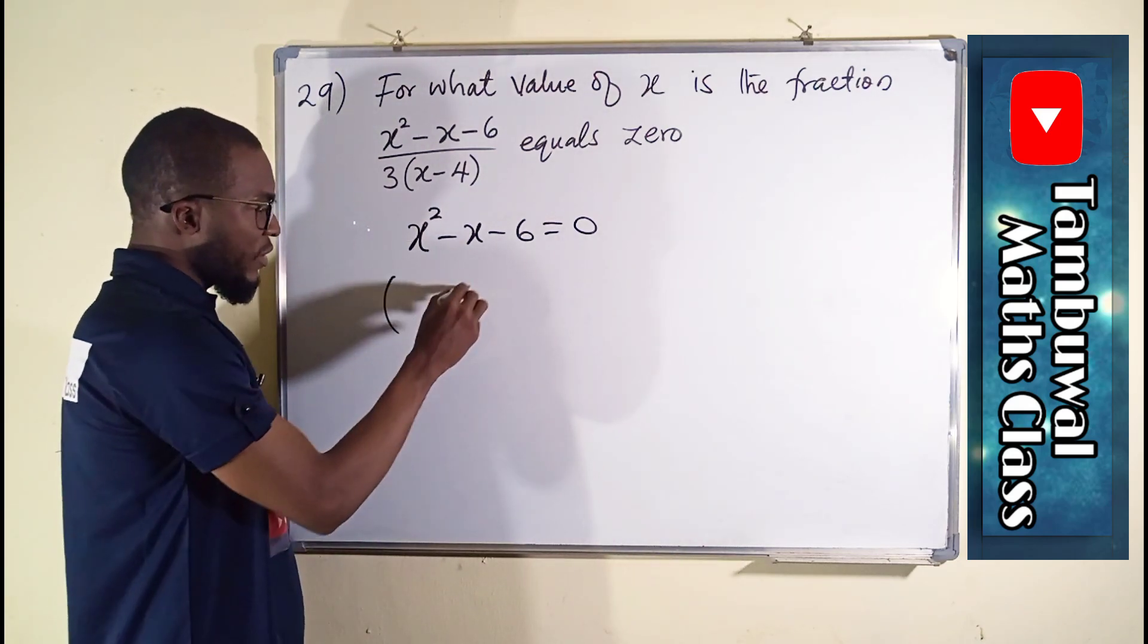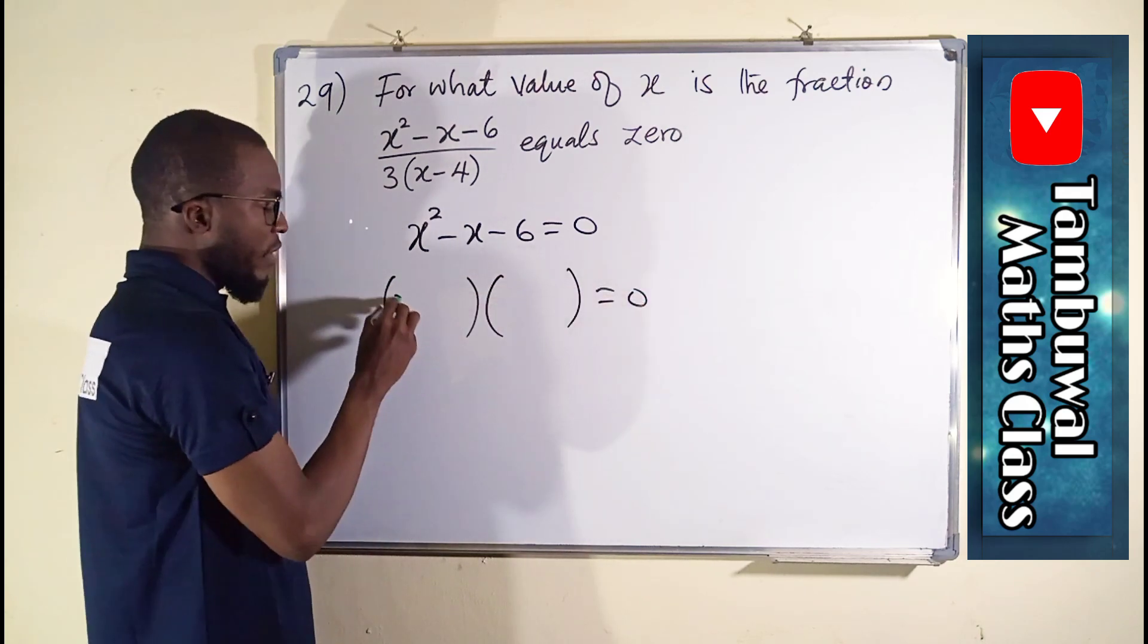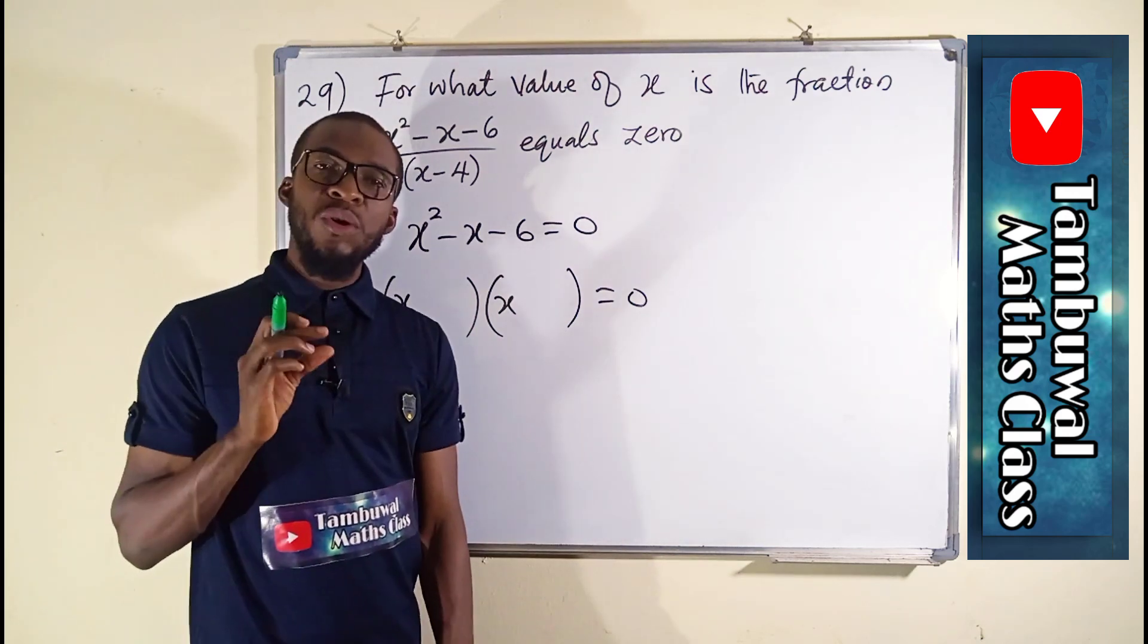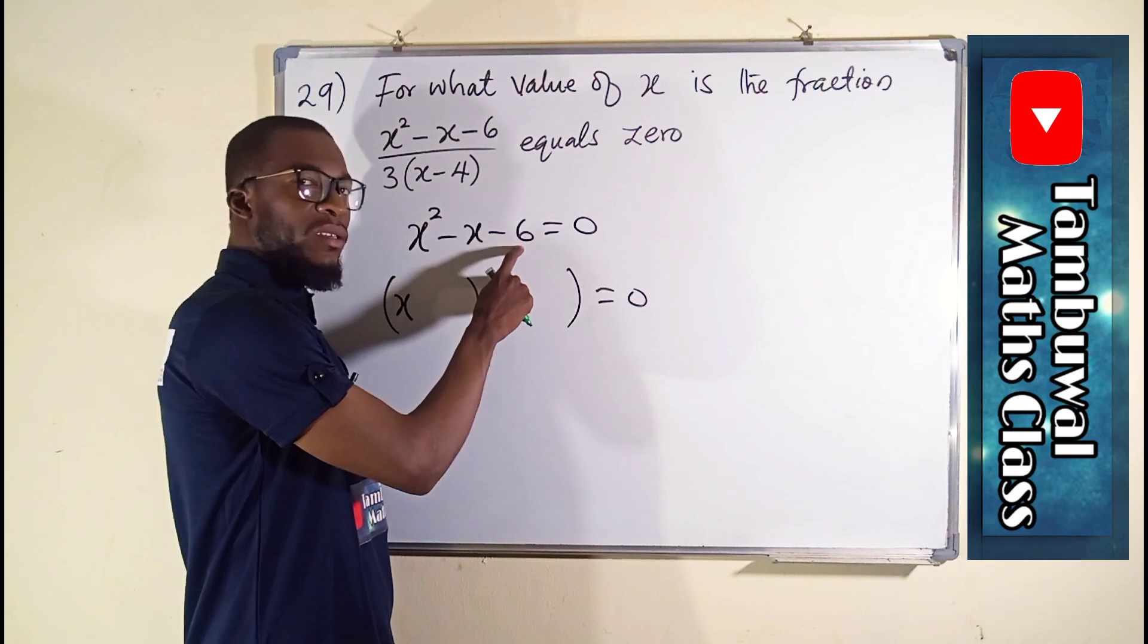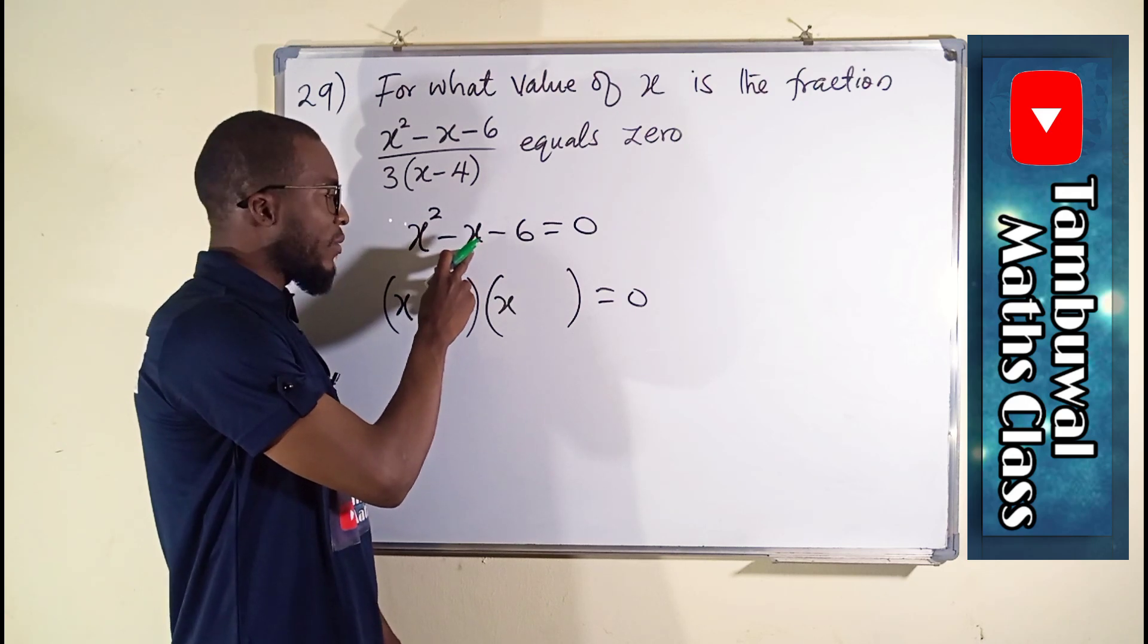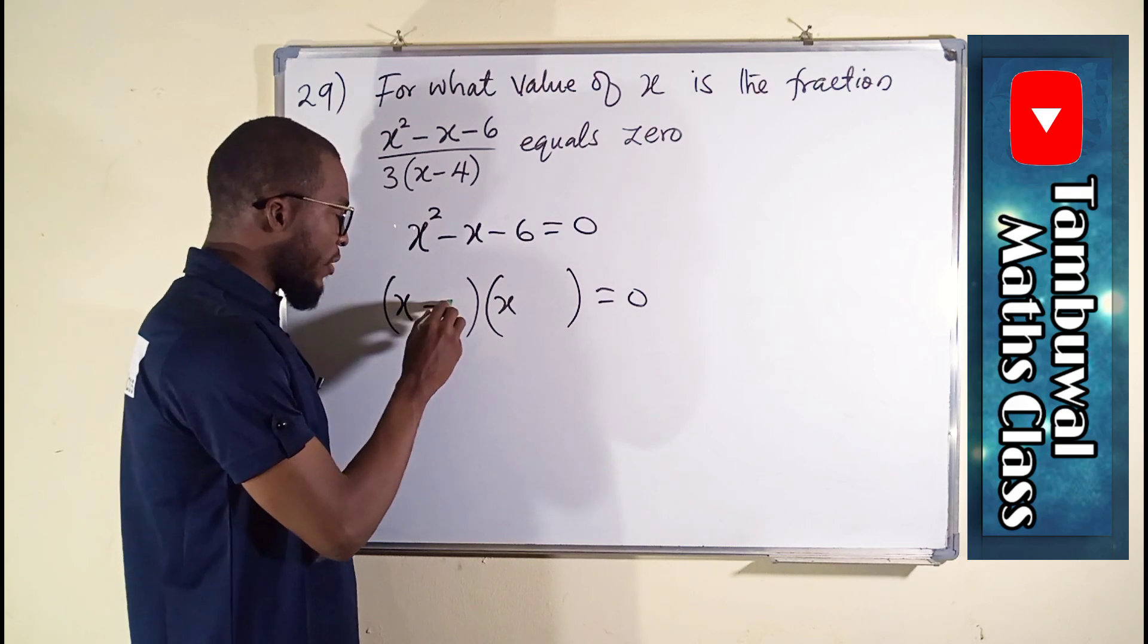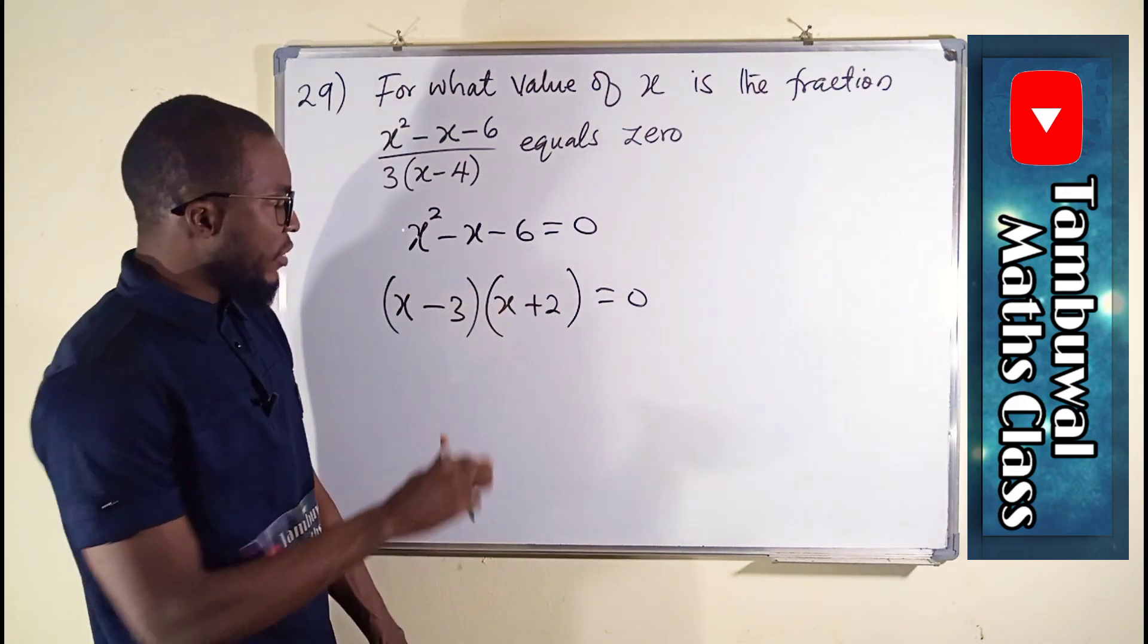We can solve this quadratic equation by factorization. We are going to think of two numbers which, when multiplied together, give us the constant term negative 6, and when added together give us the coefficient of x which is minus 1. The numbers are minus 3 and plus 2, because minus 3 times 2 is minus 6, and minus 3 plus 2 is minus 1.